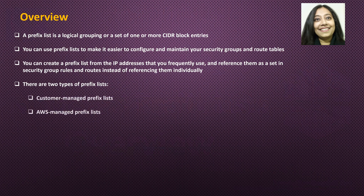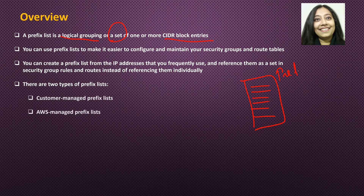What is a Managed Prefix List? A prefix list is a logical grouping or a set of one or more CIDR block entries. So for example, you have multiple IP addresses. If you create a list out of it, this is what a prefix list is all about. You can use prefix lists to make it easier for you to configure and maintain your security groups and your route tables.